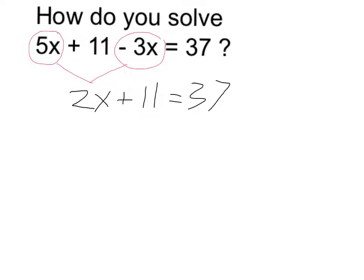Now I want to get the x eventually by itself. In order to do so, I need to get rid of the 2 times and the plus 11. It's usually best to start working from the outside in, and in this case I'm going to do that.